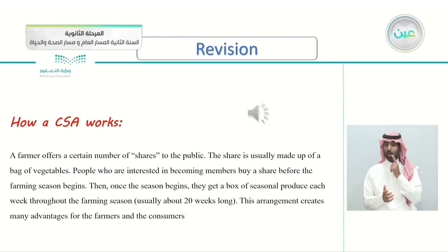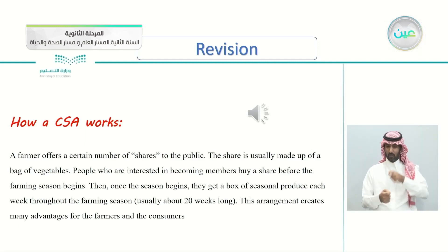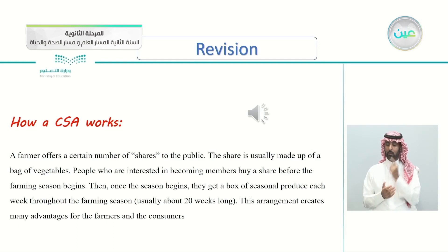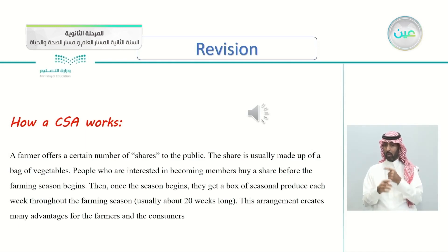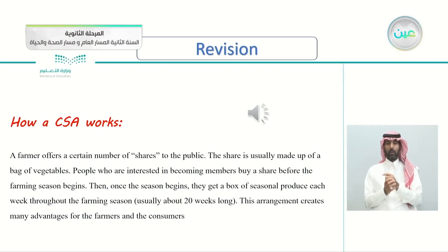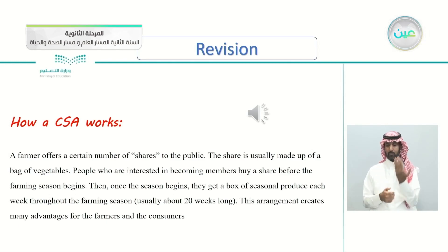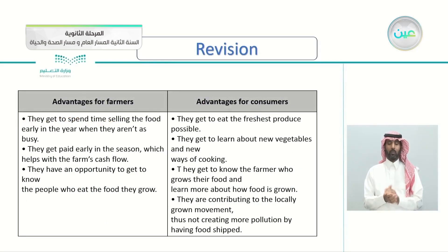The last section is 'How a CSA Works.' A farmer offers a certain number of shares to the public — a share is usually a bag of vegetables. People buy a share before the farming season begins, then once the season starts they get a box of seasonal produce each week throughout the farming season, usually about 20 weeks long. This arrangement creates many advantages for both farmers and consumers.